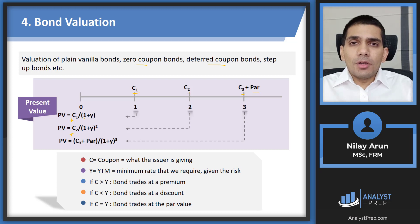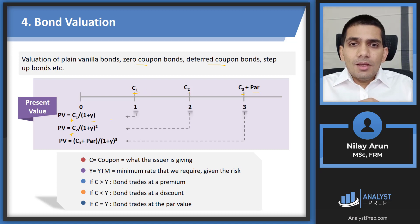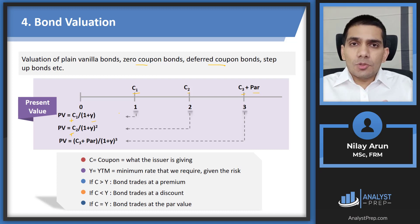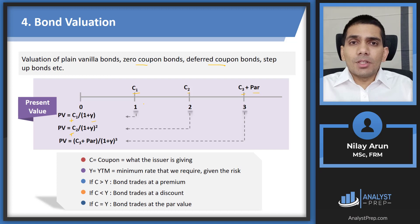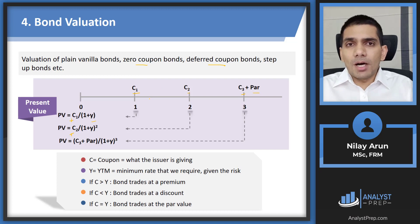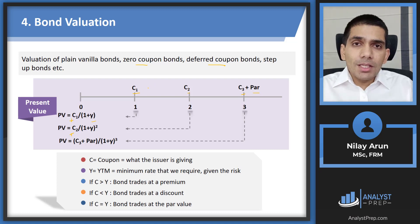The value of a bond depends on the relationship between C (the coupon) and Y (the YTM — yield to maturity, your required rate of return). If what the issuer pays equals what you require, the bond trades at par. If the coupon is higher than your required return — say the issuer pays 10% and you require 7% — you're ready to pay a premium above par. This relationship between coupon and yield determines whether the bond trades at par, at a premium, or at a discount.